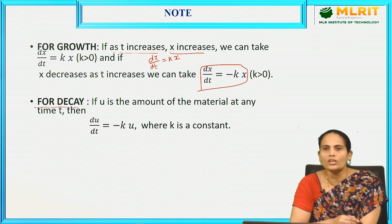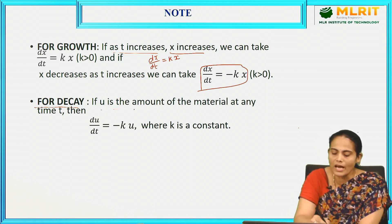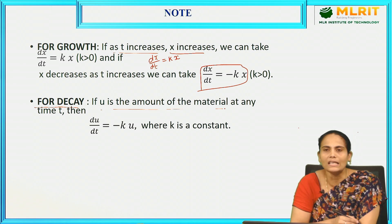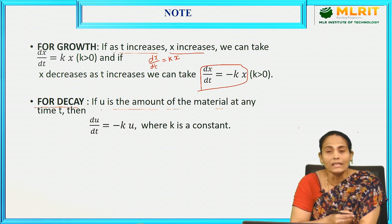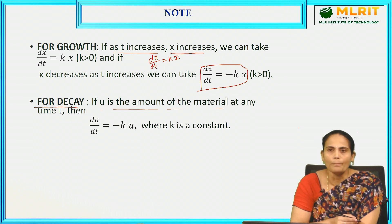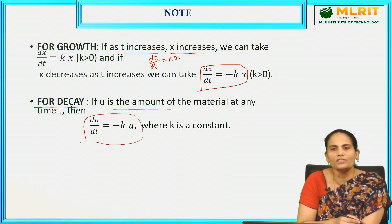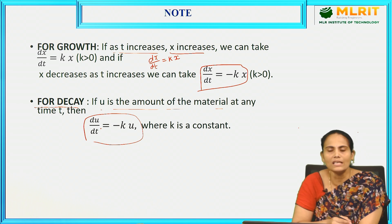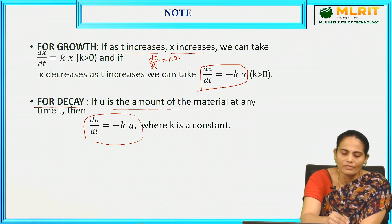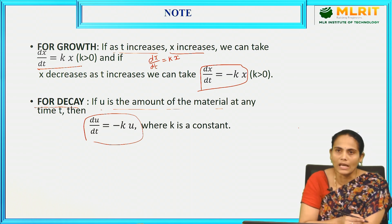For decay, we take the proportionality constant as −k. If u is the amount of material at any time t, and x is decreasing, then you take the proportionality constant as −k. The first order first degree differential equation becomes du/dt = −k·u. For growth, the equation is dx/dt = kx.